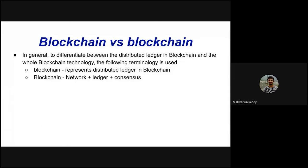A small clarification: we generally represent the distributed ledger as 'blockchain' with a small 'b', and the entire blockchain network (which includes the distributed ledger and the consensus algorithm) with a capital 'B'. There are no strict standards — different people follow different conventions.